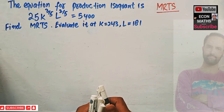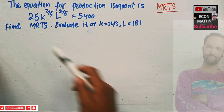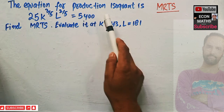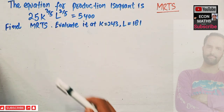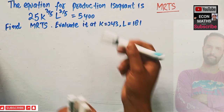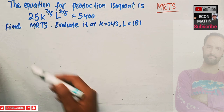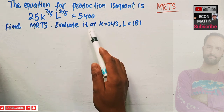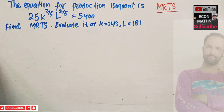In this video we will solve a problem on how to find the marginal rate of technical substitution from a given production isoquant. The equation for the production isoquant is given as 25K to the power 3/5 times L to the power 2/5 equals 5400. We have to find the marginal rate of technical substitution and evaluate it when capital K equals 243 and labor L equals 181.